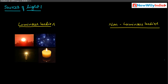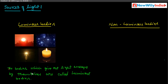So these are the different types of luminous bodies. A luminous body means a body which gives out light energy by itself. The bodies which give out light energy by themselves are called luminous bodies.